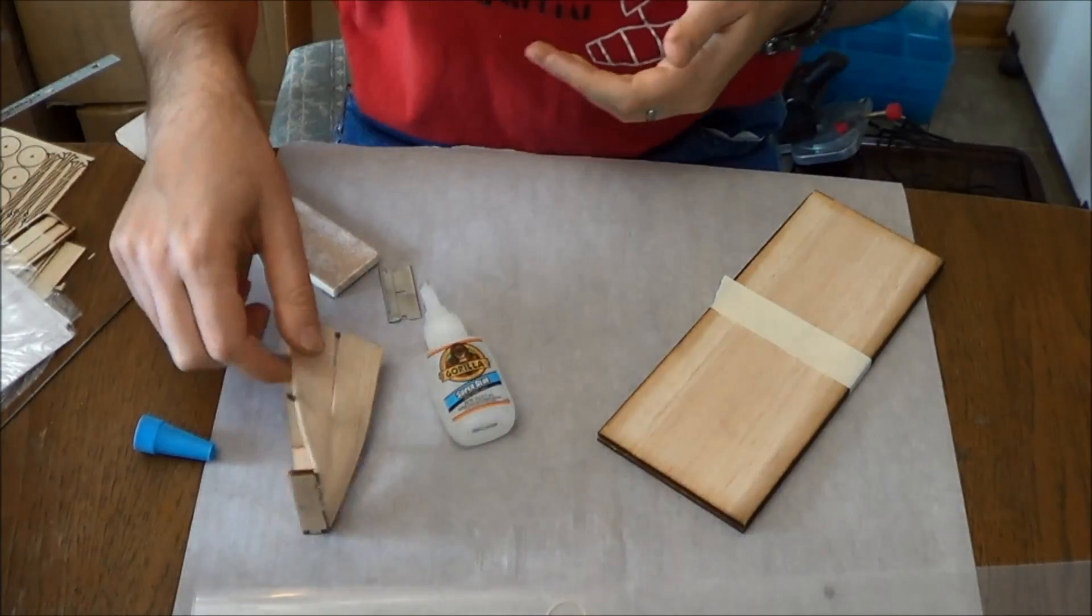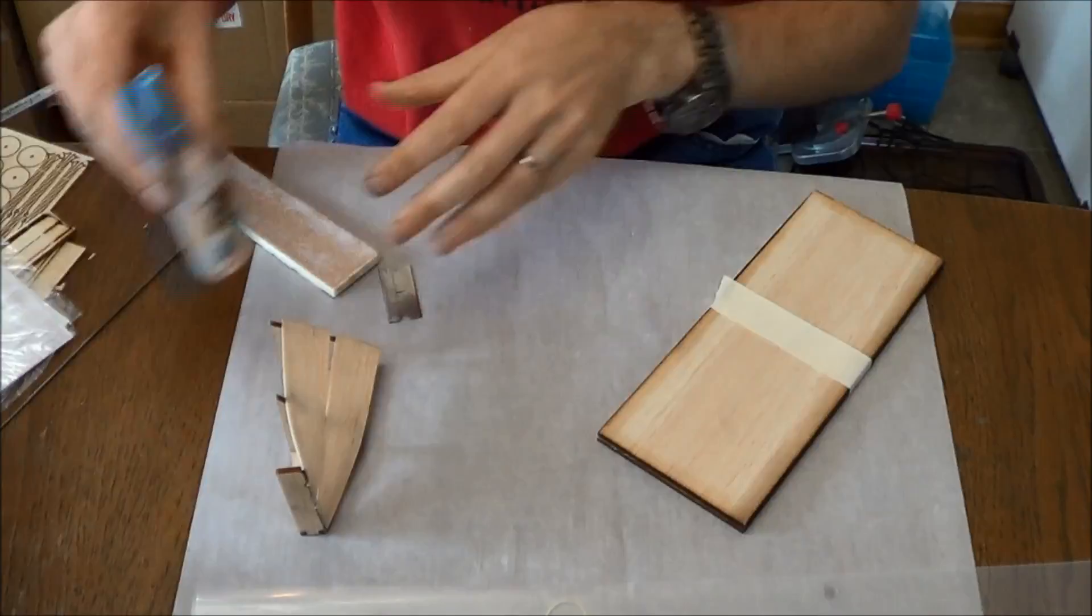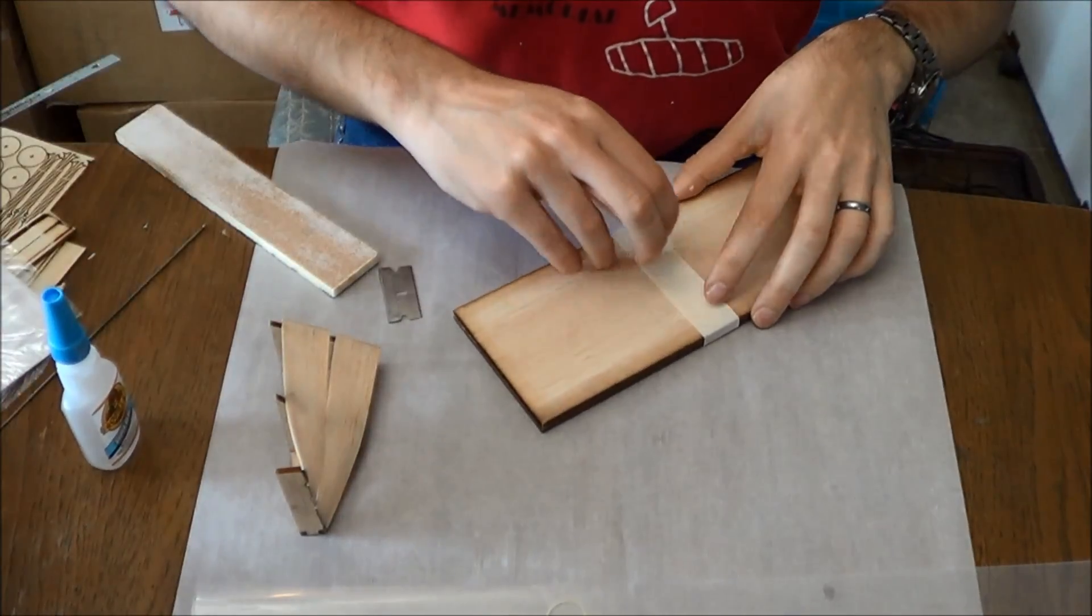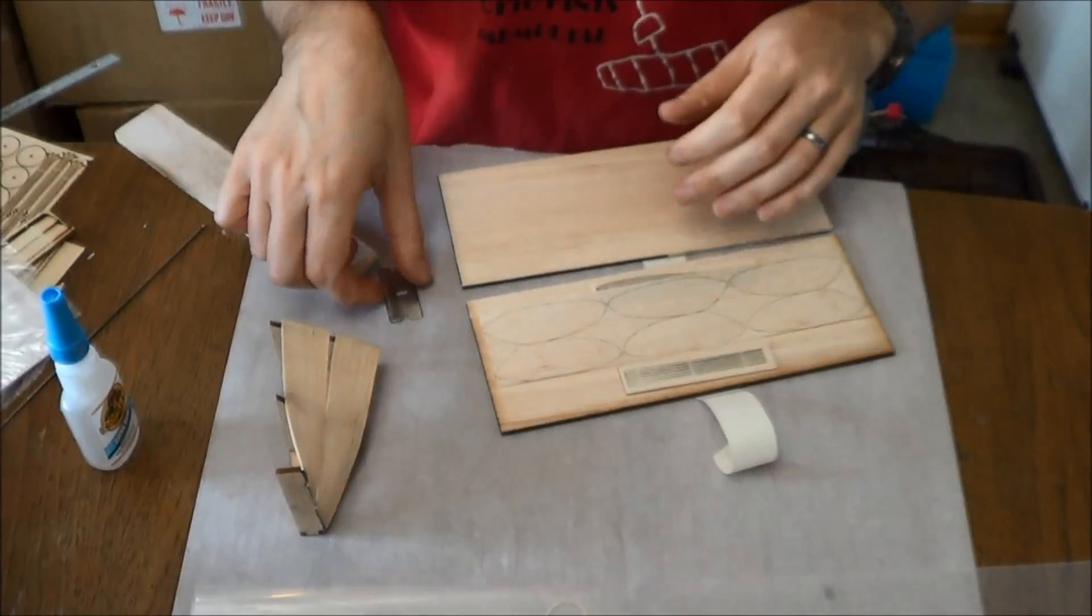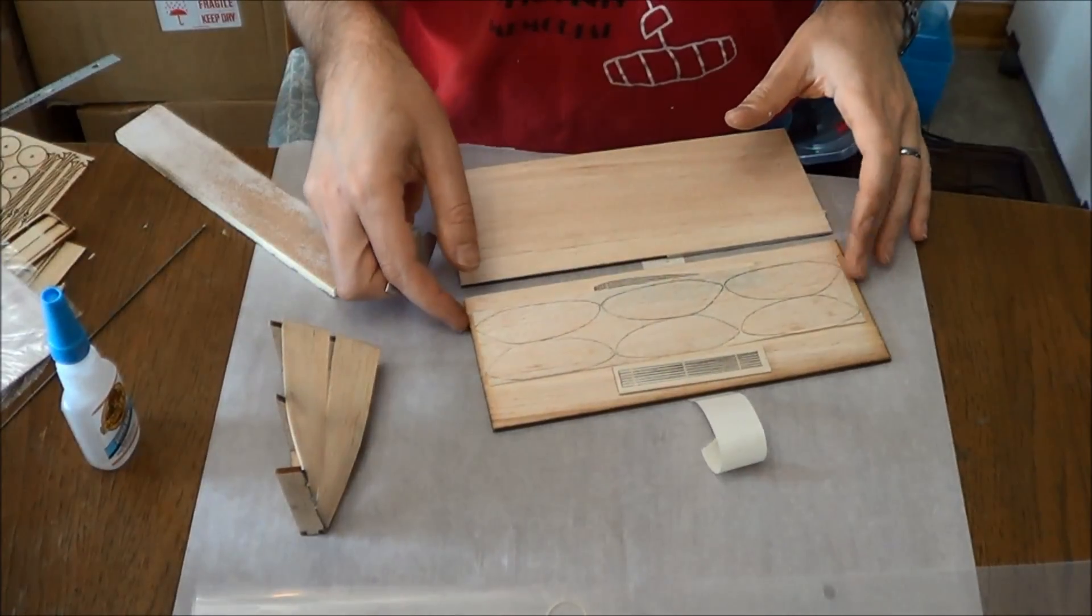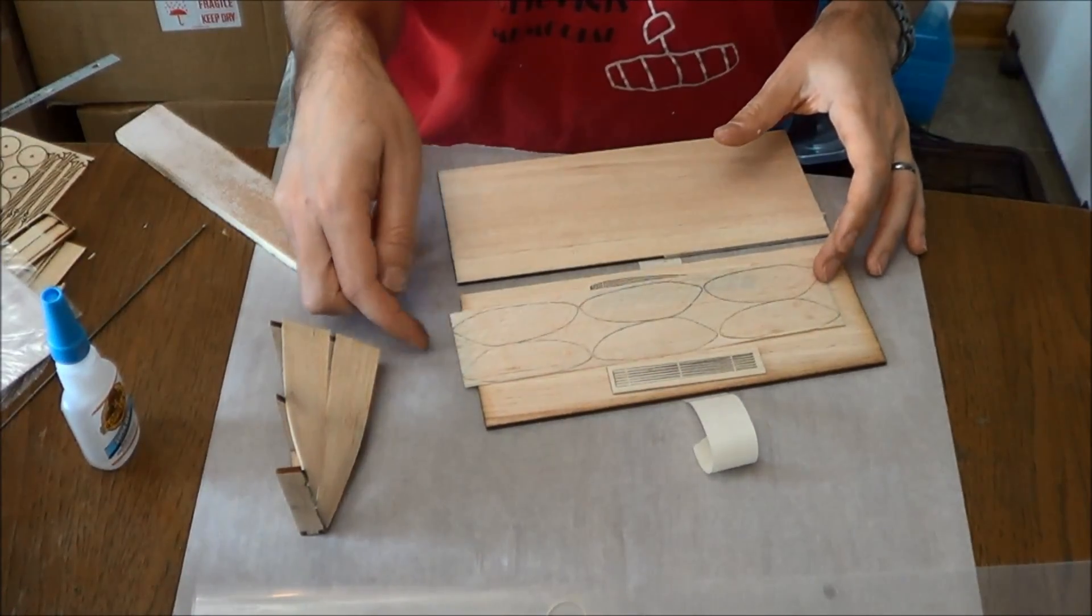Okay, so we've got our propeller pitch gauge here that we've built out, and now we are going to open up this area again, and what you want to do is cut out two propeller blades.